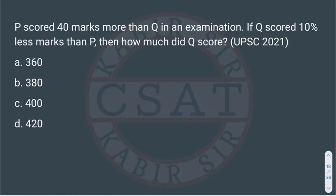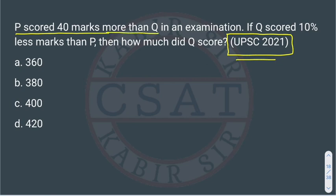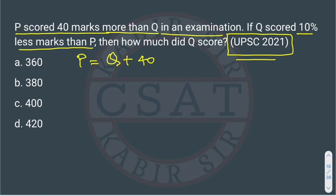This question is from percentages, asked in the UPSC 2021 CSAT exam. The question states: P scored 40 marks more than Q in an examination, and Q scored 10% less marks than P.